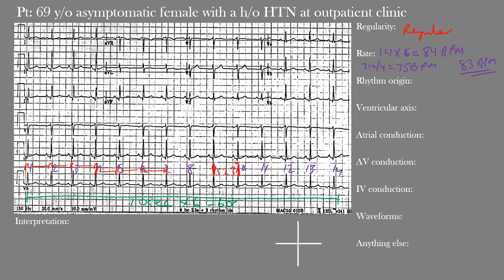Moving to rhythm origin: we have narrow QRS complexes, so the rhythm must be supraventricular in origin — originating from above the ventricles. We can also make out clear, defined, similarly-shaped P waves. We need to ask ourselves: are we dealing with sinus rhythm? To confirm sinus rhythm, we want to look at a few leads to see if we have upright P waves. Remember, when we draw a simple box diagram of the heart, the right atrium is here, the left atrium here, the right and left ventricles below.